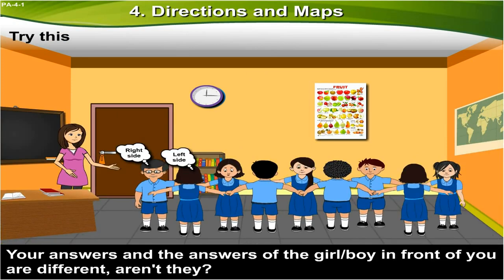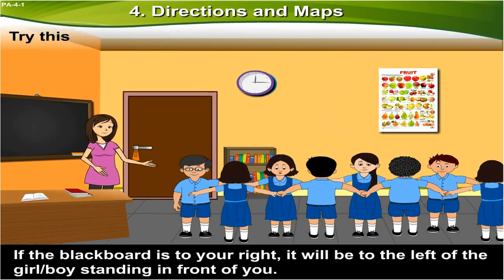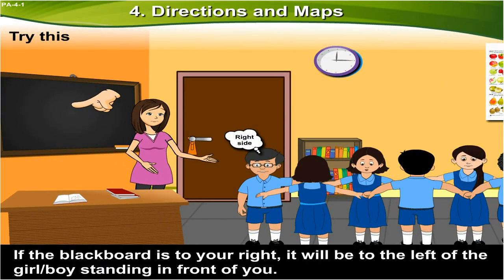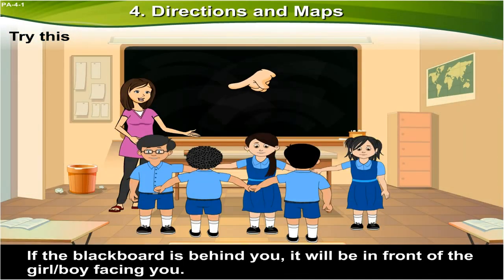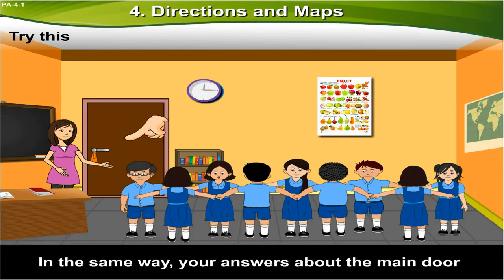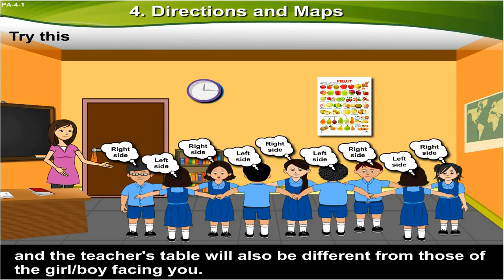Your answers and the answers of the girl or boy in front of you are different, aren't they? Why is it so? Well, let me tell you. If the blackboard is to your right, it will be on the left of the girl or boy standing in front of you. If the blackboard is behind you, it will be in the front of the girl or boy facing you. In the same way, your answers about the main door and the teacher's table will also be different from those of the girl or boy facing you.